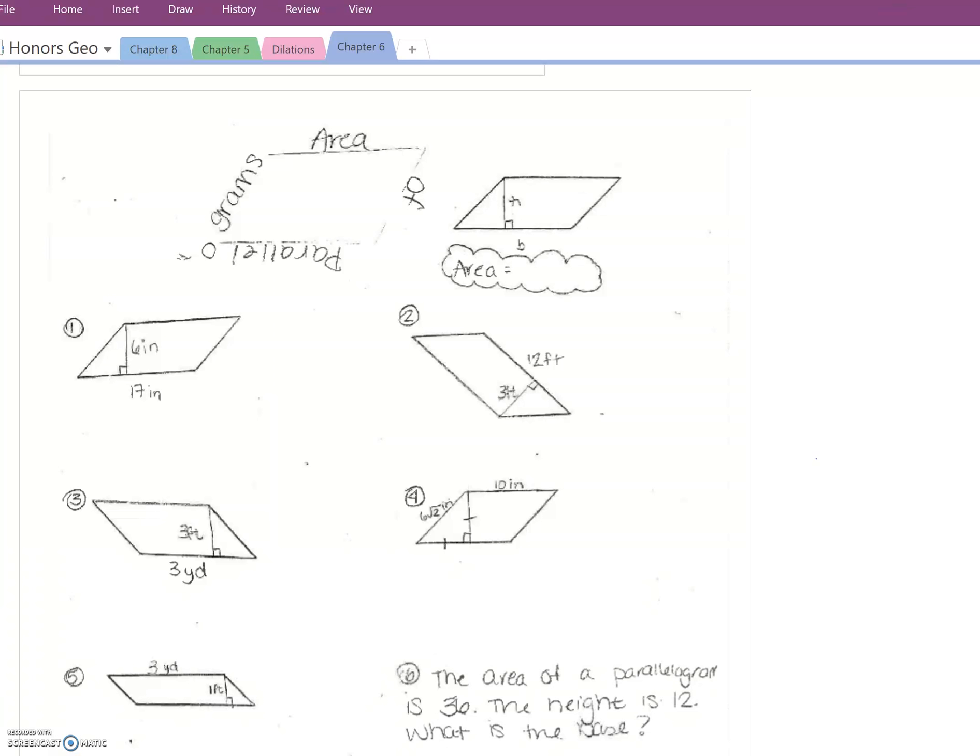Now a parallelogram is sort of like a rectangle but it's slanted. We know that the area of a rectangle is just length times width, so if I could take this parallelogram and turn it into a rectangle, I can very easily figure out what the formula is to find the area of a parallelogram.